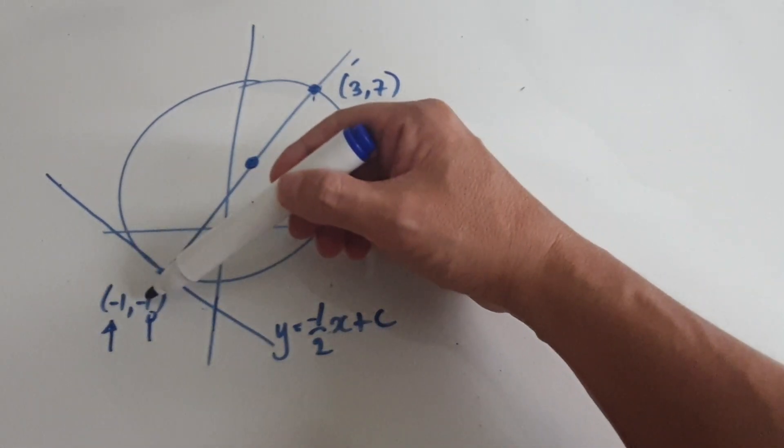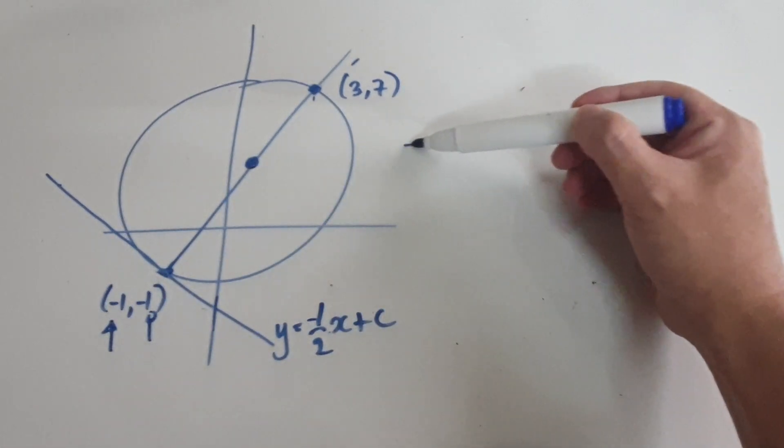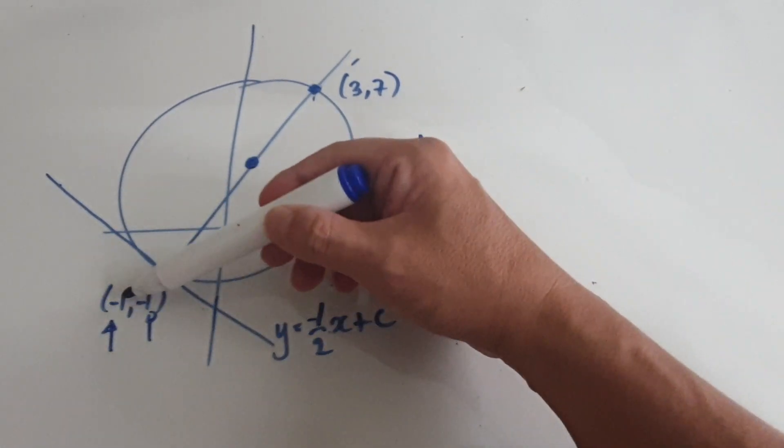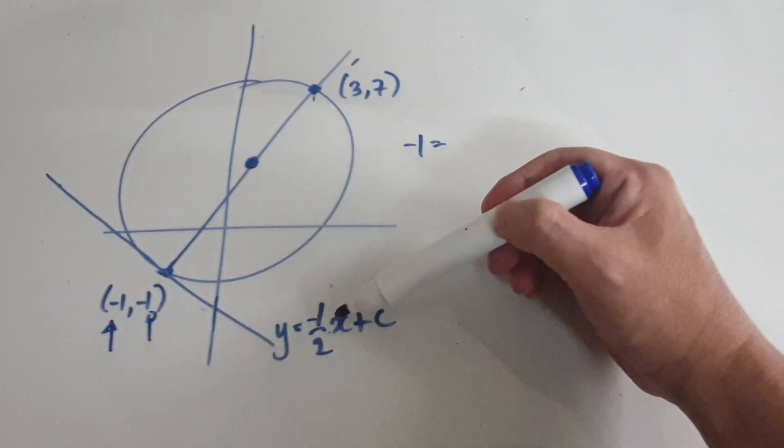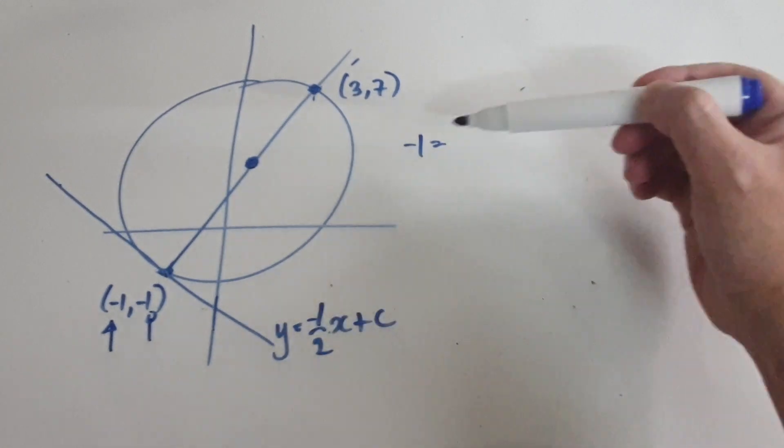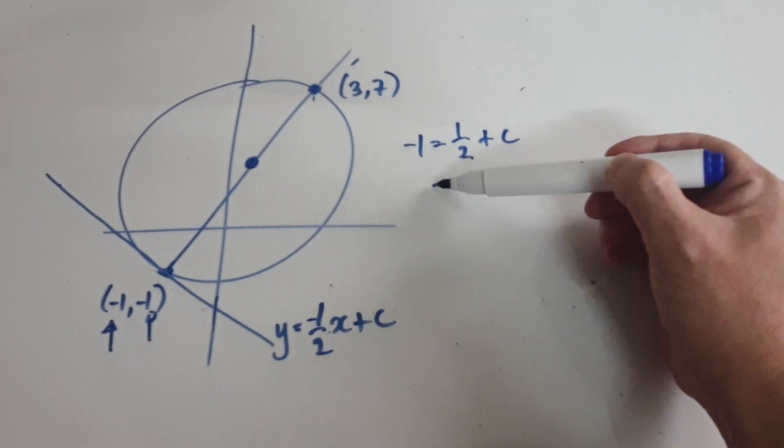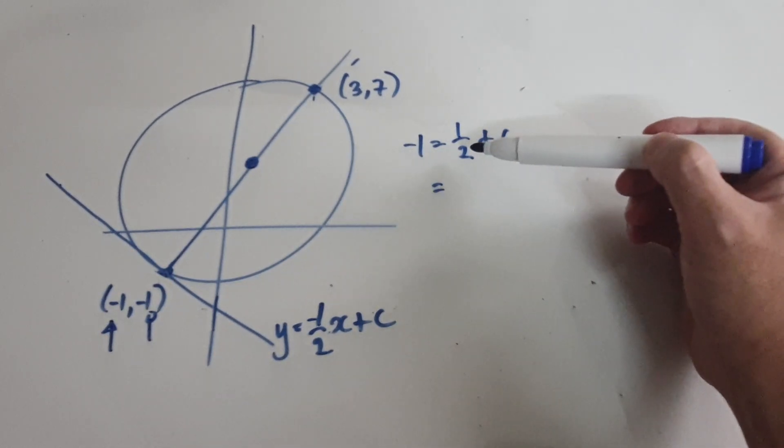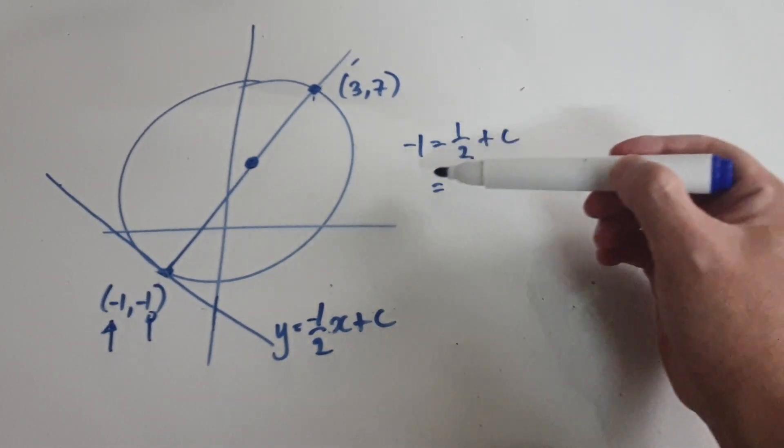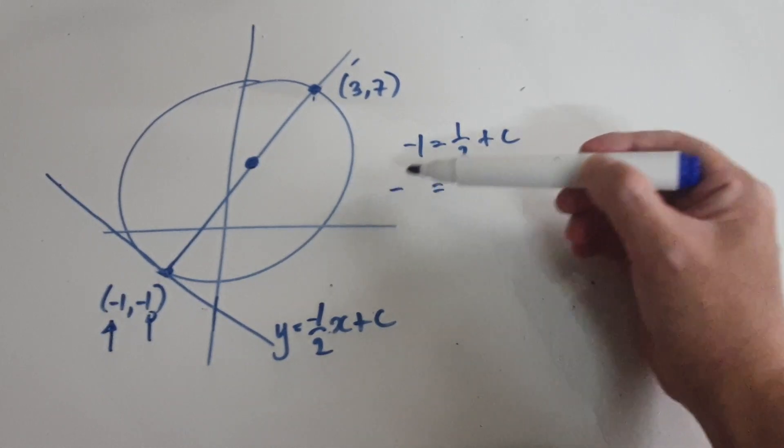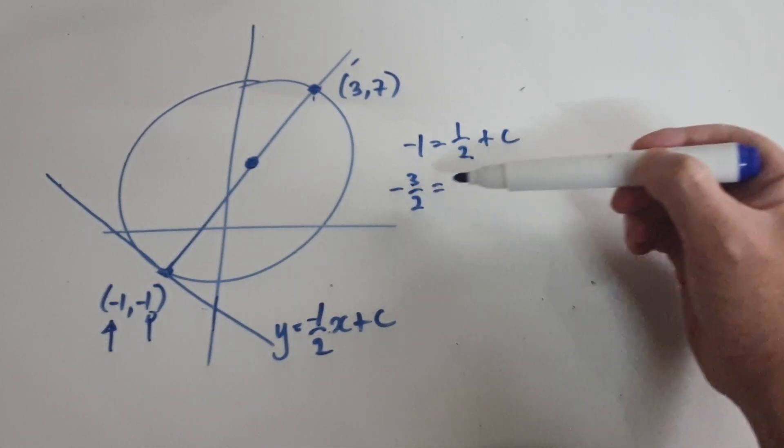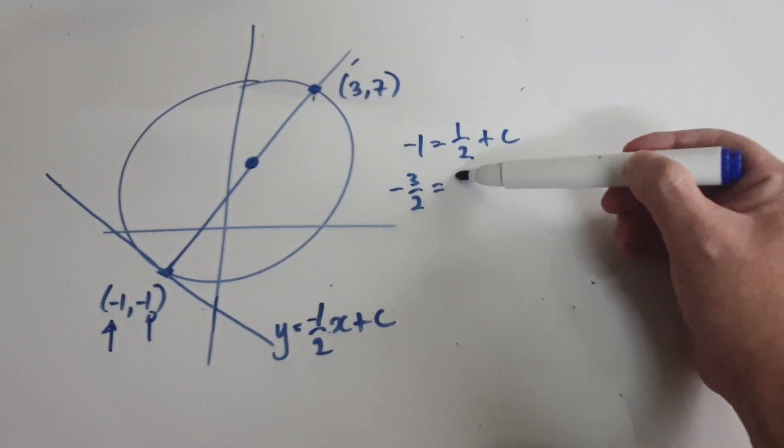So when you put negative 1 into the Y, that would be negative 1 equals, put negative 1 into the X. Negative 1 times negative 1/2 will be positive 1/2, and then plus C. So our job is to work out C. So take away 1/2 from both sides. So that would be negative 3 and 1/2, or -3/2 equals C.